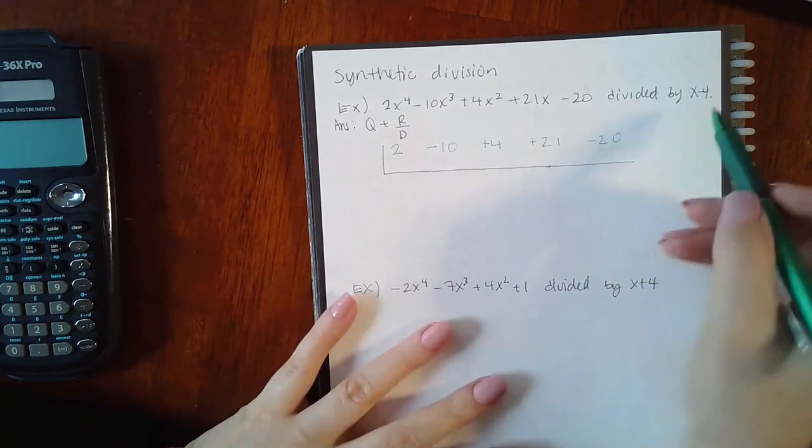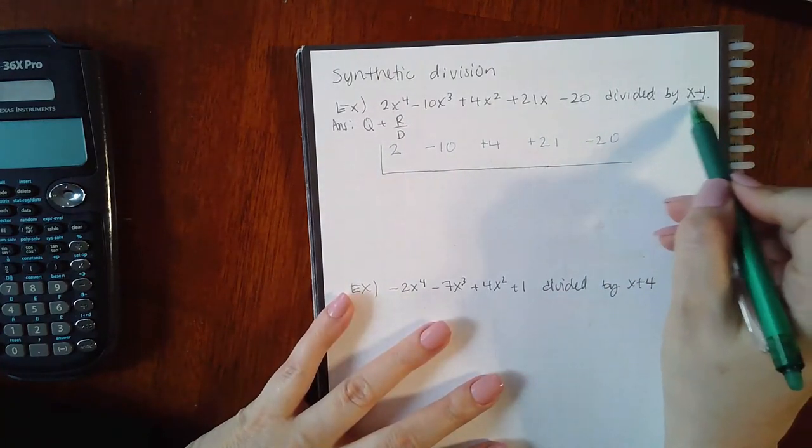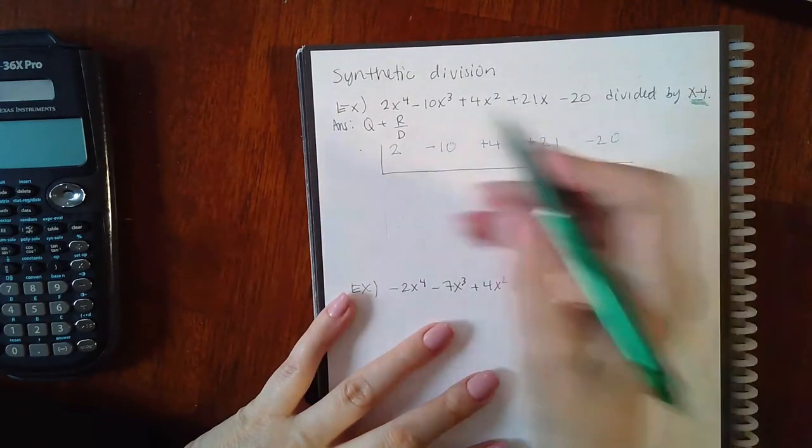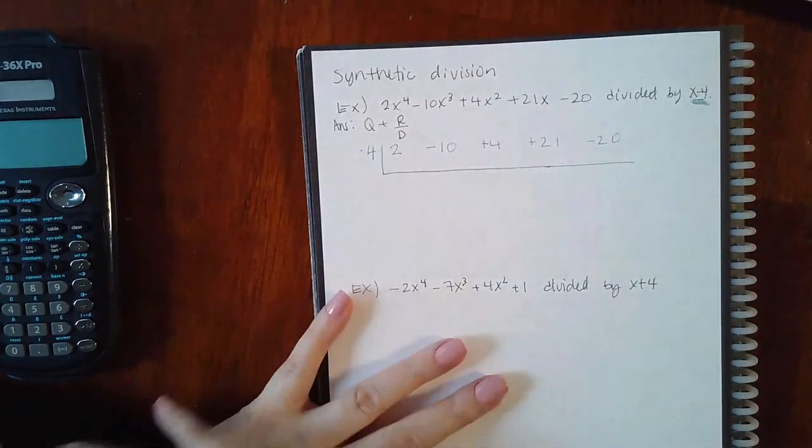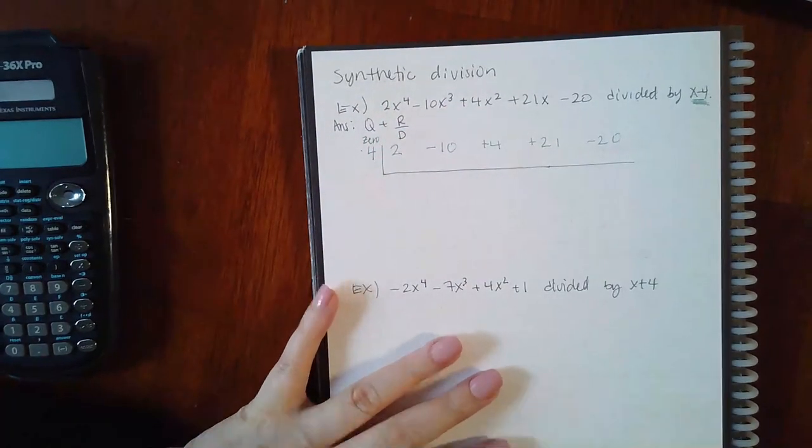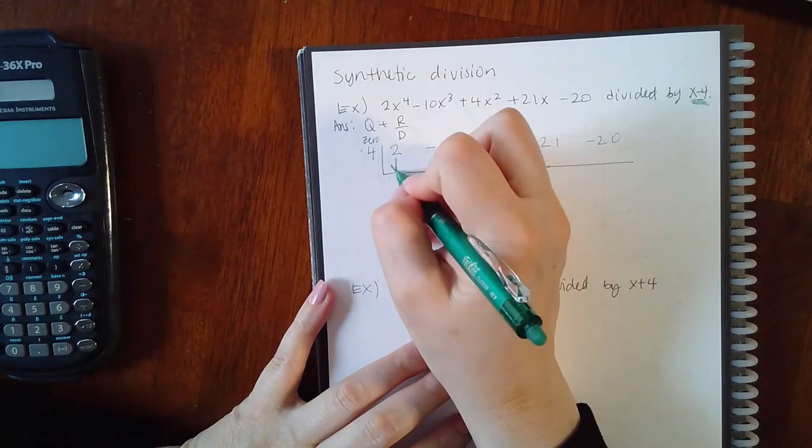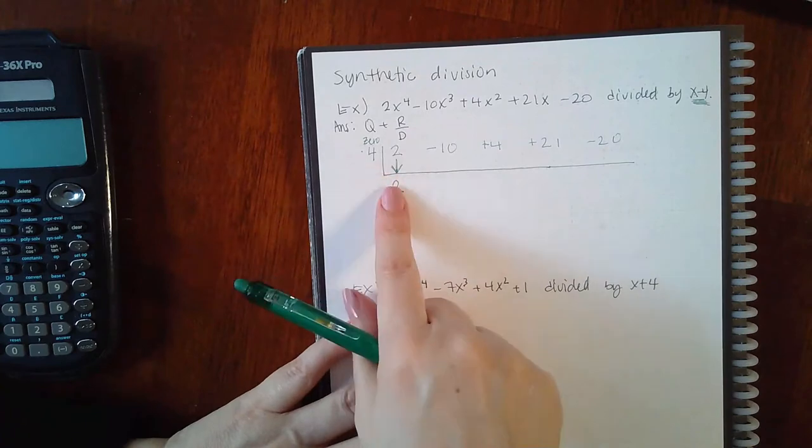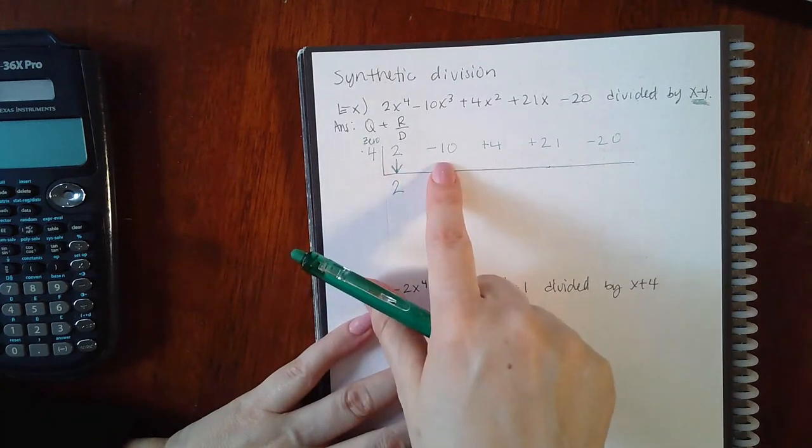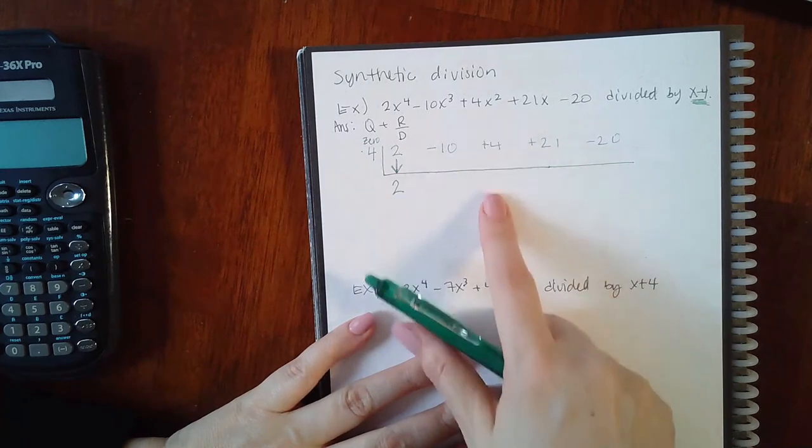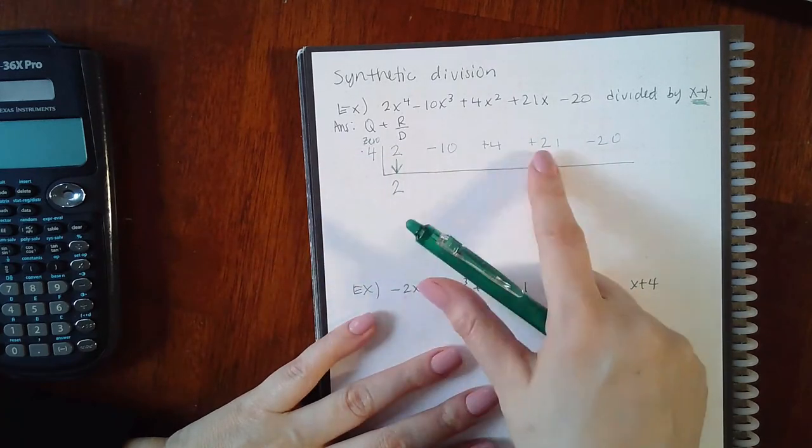Then I'm going to take the zero that comes from this factor and put it here. If this is x minus 4, then a positive 4 is the zero that goes there. The first number always comes down, and then after that it's multiply and put the result inside, then combine. Multiply, put the result inside, combine, multiply, put the result inside, combine, and so on.